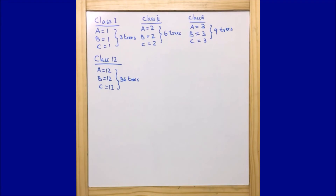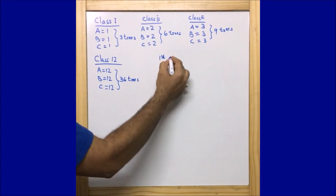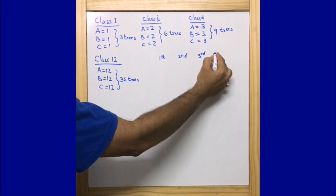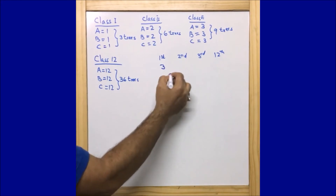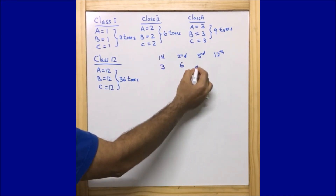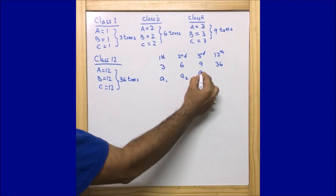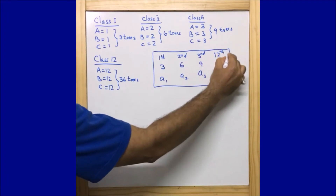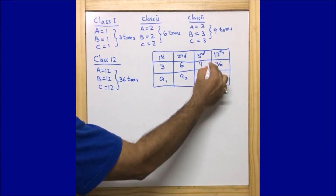Let us put the data in the form of a table. I will consider Class 1 as the first term, Class 2 as the second term, Class 3 as the third term, and Class 12 as the 12th term. So: a1 = 3 trees, a2 = 6 trees, a3 = 9 trees, and a12 = 36 trees. This is the data we got from the information the school has given us.